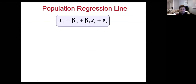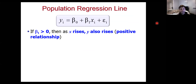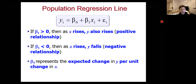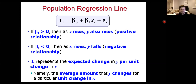Beta one is the slope coefficient on X. If beta one is positive, we have a positive relationship — increases in X cause increases in Y. If beta one is negative, increasing X will cause Y to fall. Beta one is interpreted as the average change in Y with respect to a unit change in X — that is, delta Y over delta X. We will run a statistical test with the null hypothesis that beta one equals zero, meaning no relationship, and look for sufficient evidence that it's significantly positive or negative.